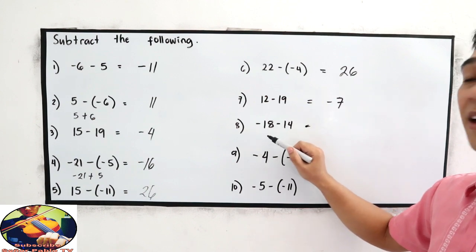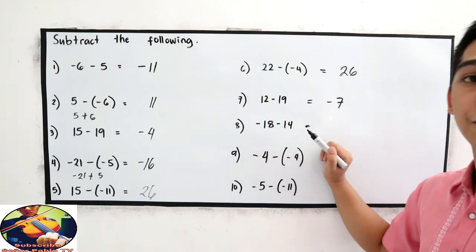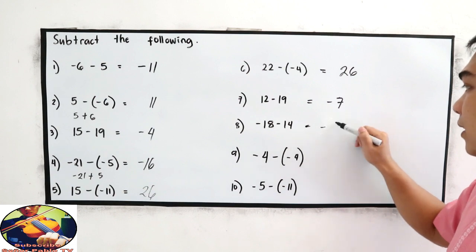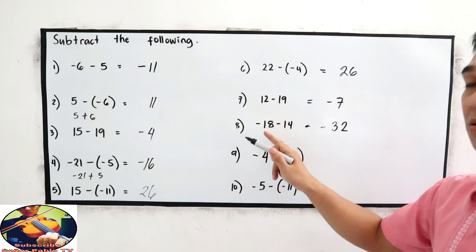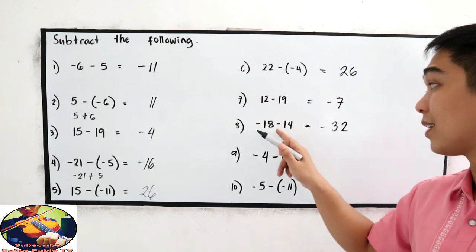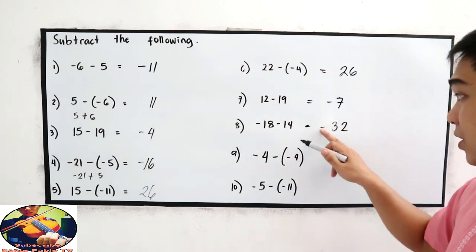Great. Negative 18 minus 14, negative 32. Because they are both negative, then add the number and copy their sign, which is negative.